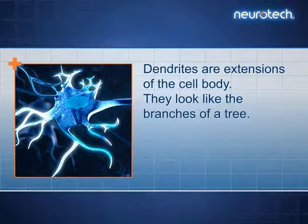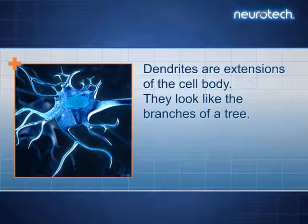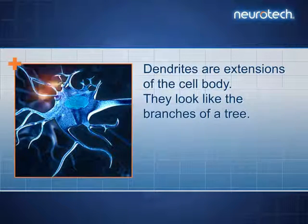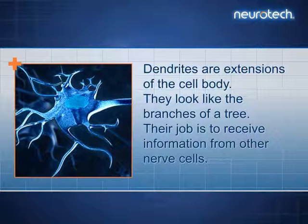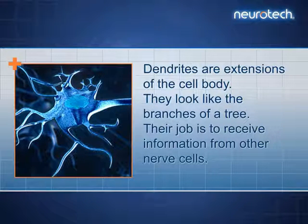Dendrites are extensions of the cell body. They look like the branches of a tree. Their job is to receive information from other nerve cells.